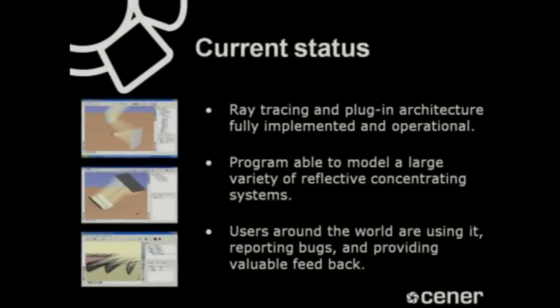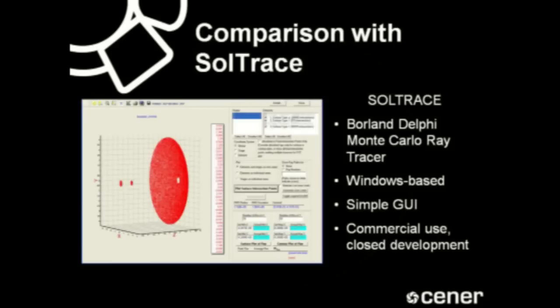The current status of Tonatiuh can be summarized as follows: the core raytracing and plugin functionalities of the program are fully implemented, tested and operational. The program can already be used to model a large variety of reflective concentrating systems, including dishes, parabolic troughs and central receiver systems. It is starting to gain momentum as an open source project, with people around the world using it, reporting bugs and providing feedback.